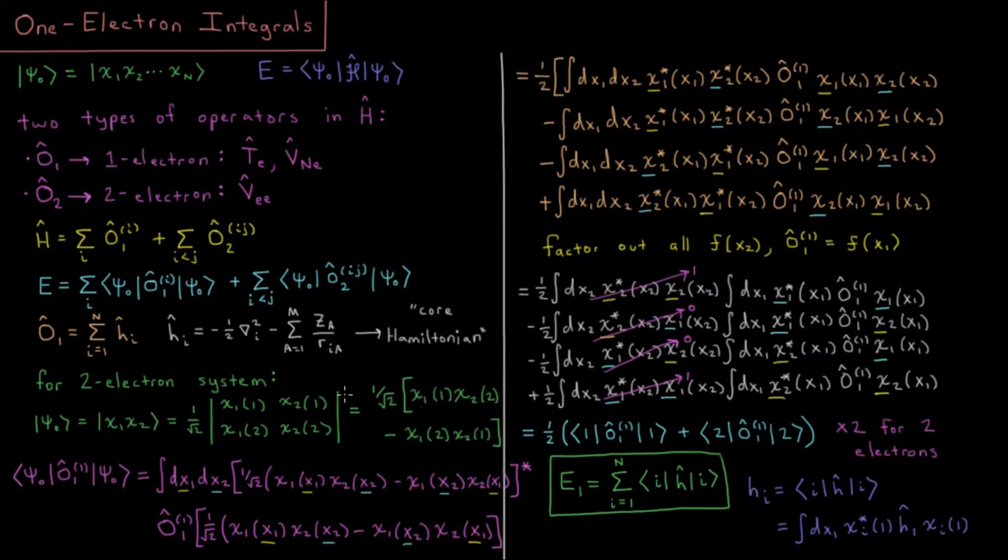This type of integral that we have here, I might call hᵢ without the operator, meaning just the expectation value, the core Hamiltonian energy or the core energy for electron i being that Dirac notation integral, which will be the integral over x₁ of electron 1 being in spin orbital χᵢ.